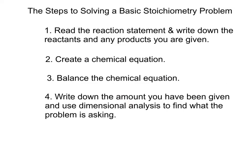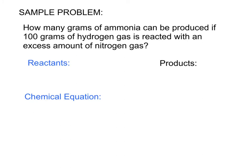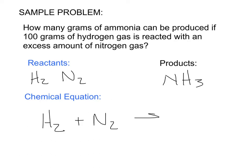Here's a sample problem: how many grams of ammonia can be produced if 100 grams of hydrogen gas is reacted with an excess amount of nitrogen gas? Right off the bat I know my reactants are hydrogen gas and nitrogen gas, and my product is ammonia — the symbol for ammonia is NH₃. So my chemical equation is: hydrogen gas plus nitrogen gas will create ammonia.